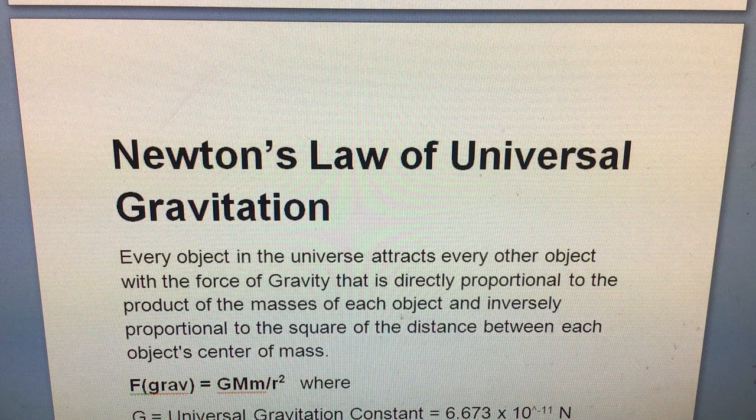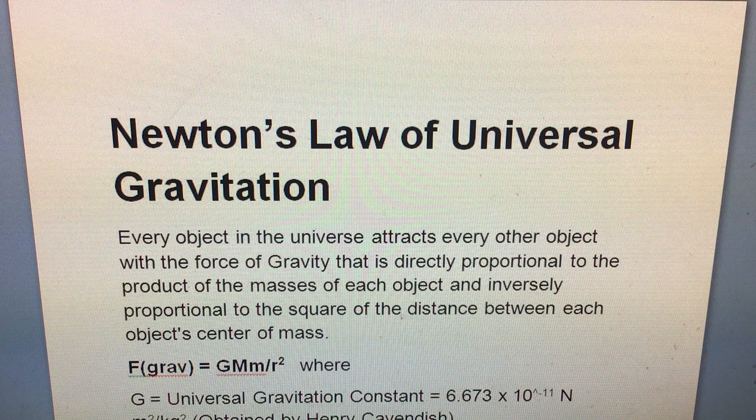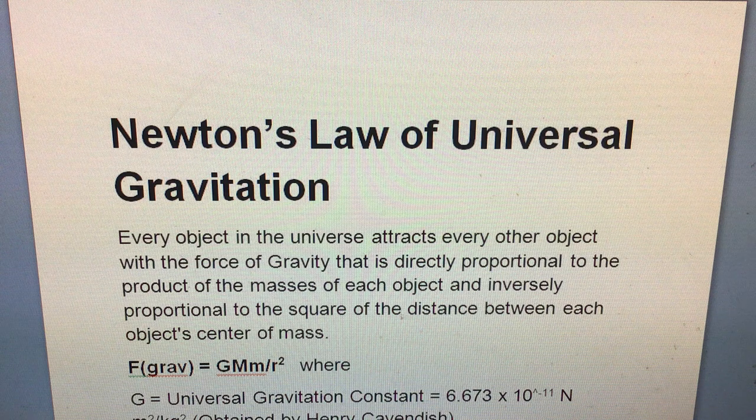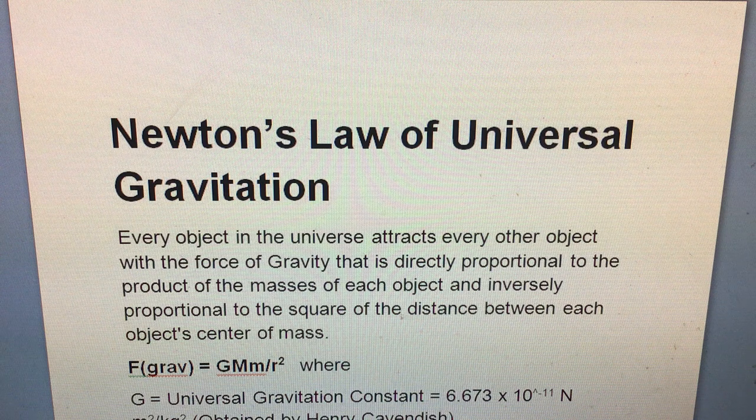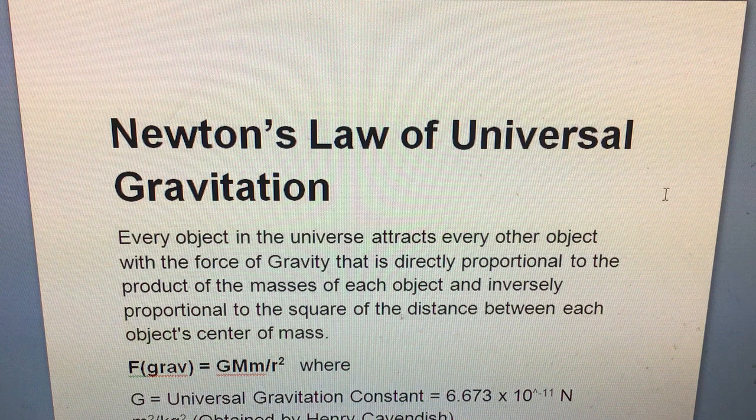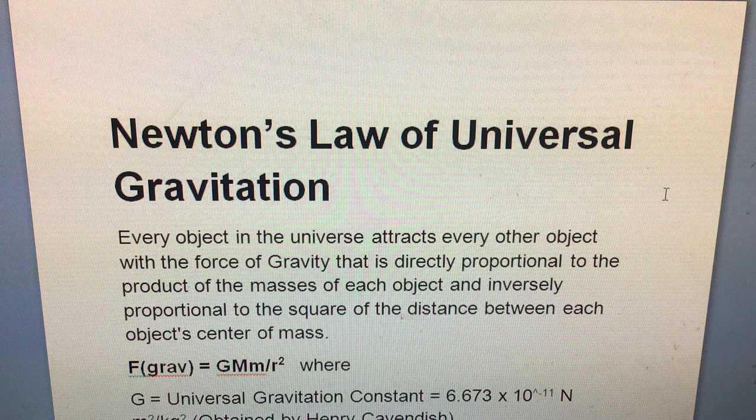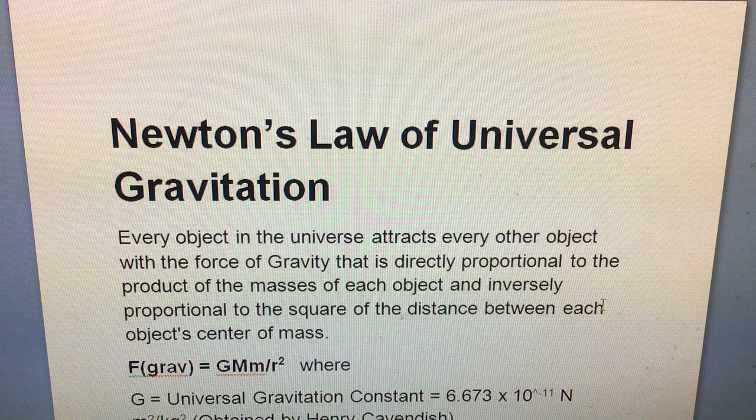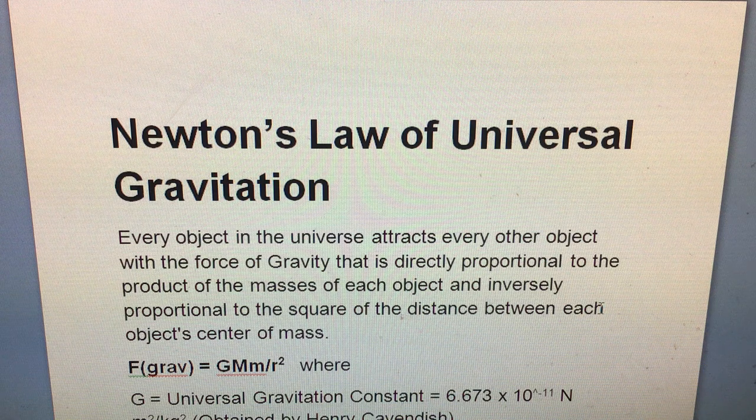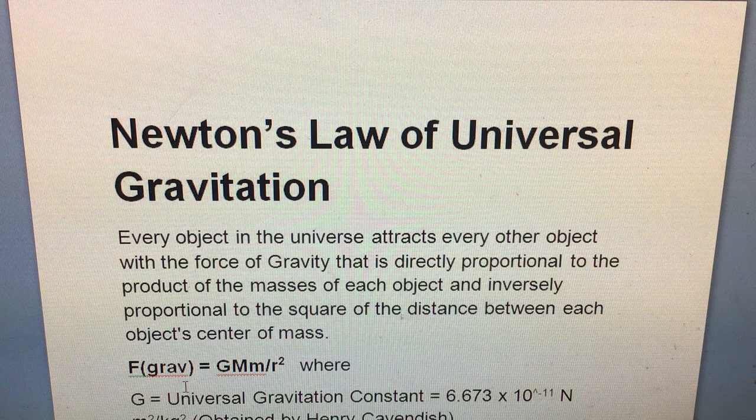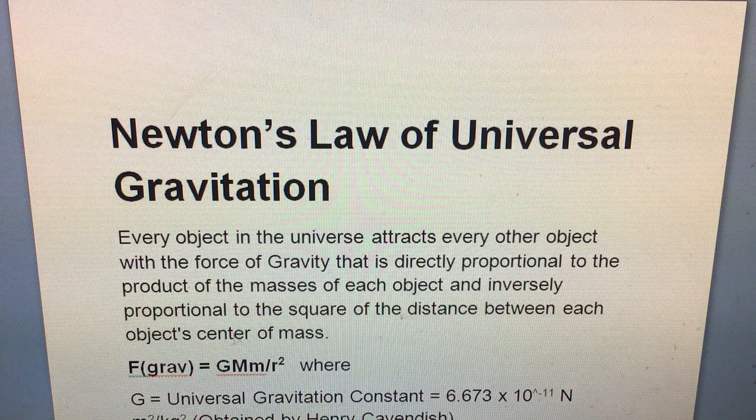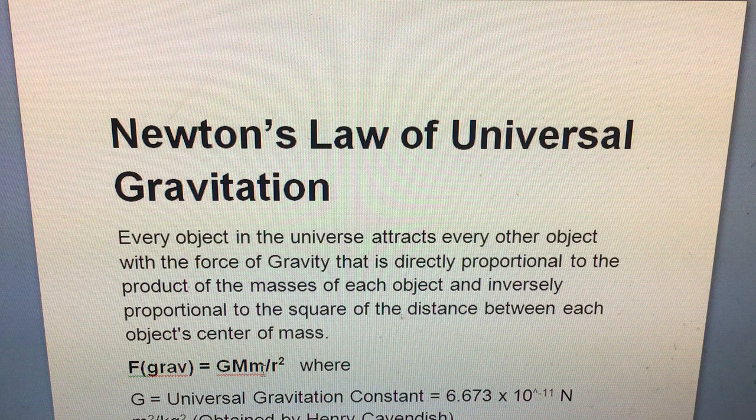The first one is Newton's law of universal gravitation. Newton's law of gravity, one of the great milestones in the history of physics, says that every object in the universe attracts every other object with a force of gravity, and that force is directly proportional to the product of the masses of each object and inversely proportional to the square of the distance between each object's center of mass.